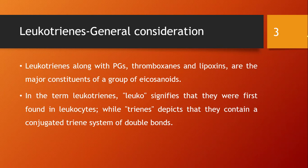Leukotrienes, along with prostaglandins, thromboxanes, and lipoxins, are the major constituents of a group called eicosanoids. In the term 'leukotriene,' 'leuco' signifies that they were found in leukocytes, i.e., white blood cells.